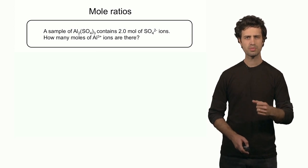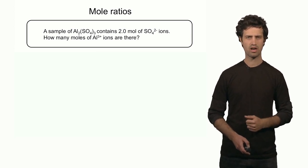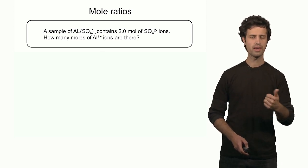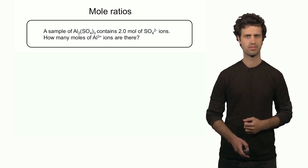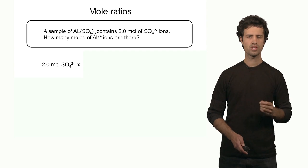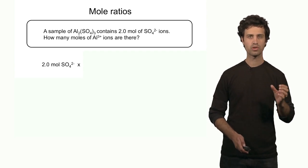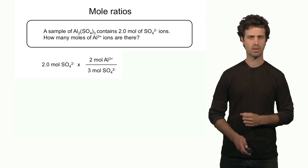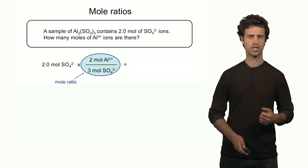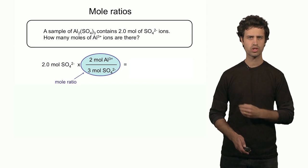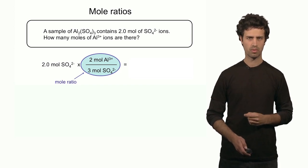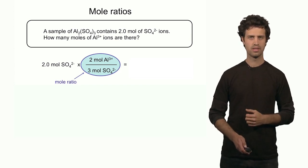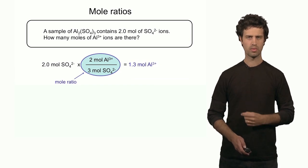The answer is yes. This problem is very similar to the previous. I have two types of countable objects — sulfate ions and aluminum ions. Knowing the amount of one, I can calculate the amount of the other. I take 2.0 moles of sulfate ions and want to convert moles of sulfate ions into moles of aluminum ions by multiplying by the ratio — called the mole ratio in this case. The mole ratio is the conversion factor: 2 moles of aluminum ions for each 3 moles of sulfate ions. The unit of moles of sulfate ions will strike out, and the answer is 1.3 moles of aluminum ions.